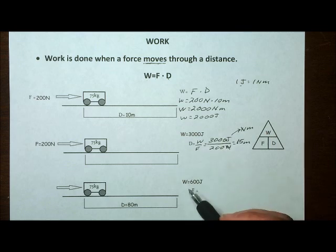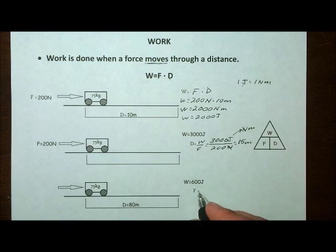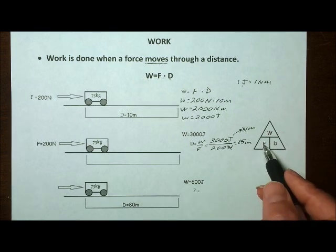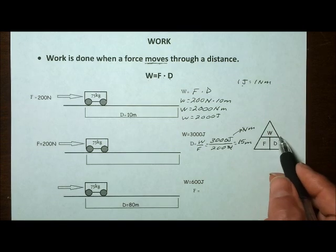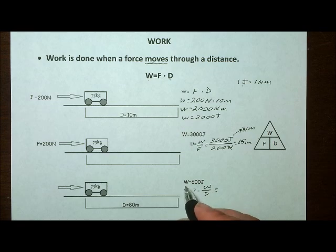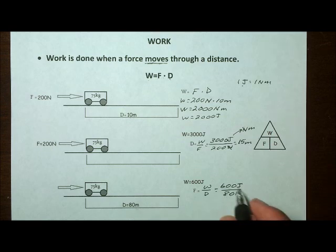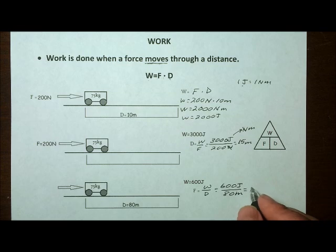Next problem — we're going to calculate force. To calculate force, we know that force equals work divided by distance. The work done here is given as 600 joules, and the distance is 80 meters. So 600 divided by 80 works out to 7.5.